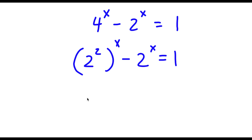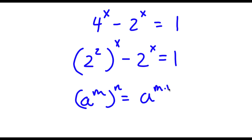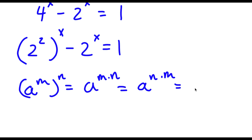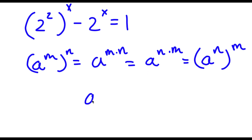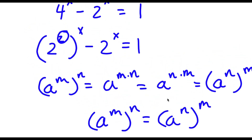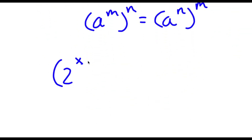Now if I have something in the form a to the power of m to the power of n, this is the same as a to the power of m times n. And m and n are interchangeable, so a to the power of m to the power of n equals a to the power of n to the power of m. In this case, we can think of 2 as m and x as n. Switching these two places, I get 2 to the power of x to the power of 2.